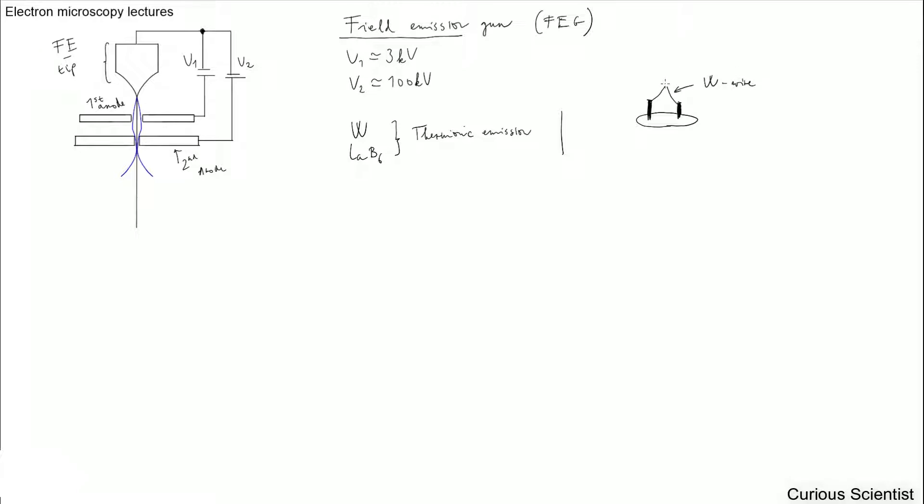But then, at the end of the tungsten wire, there is another small piece of tungsten, which is a single crystal. And it has a very sharp tip. Single crystal tungsten with a sharp tip.